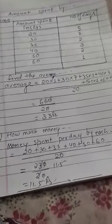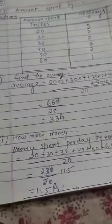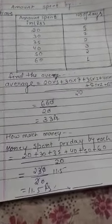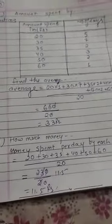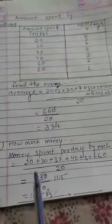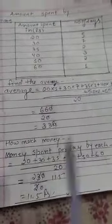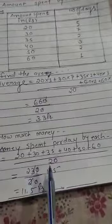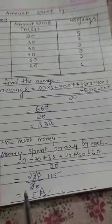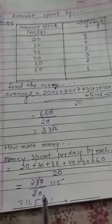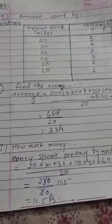Second, what is the question? How much money per day is spent by each? Per day, kitna money spent kiya gya? So what is the amount spent? Money spent per day by each. Every time kitna spent kiya gya? Add the amount of total divided by total number of days. That is 20 days. So what happens? 20 plus 30 upon 20. That is 11.5 rupees. That is the amount per day spent.